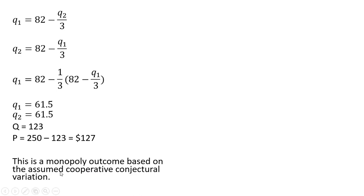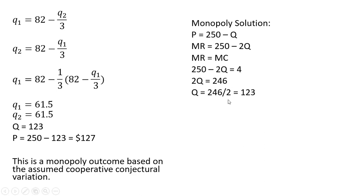I can prove that this is a monopoly outcome by solving this using a monopoly solution. If this was a two firm cartel, what would they do? They'd set marginal revenue equal to marginal cost. Here's marginal revenue, given this inverse demand, just the inverse demand with a slope that is twice as steep. Setting that marginal revenue equal to marginal cost, solving for Q, total market output is 123.